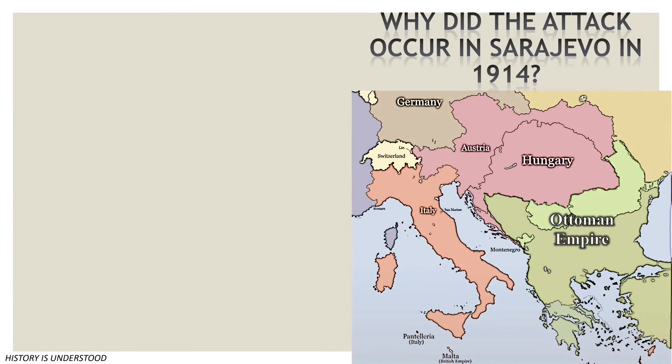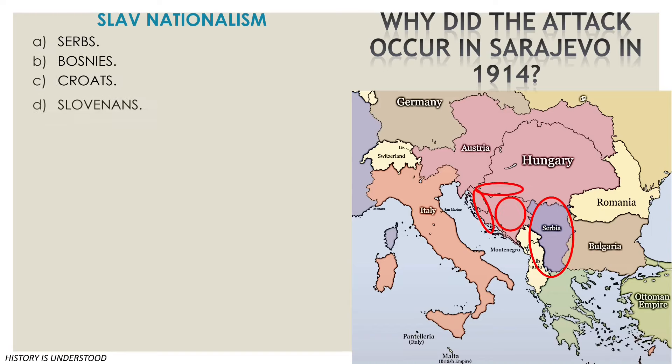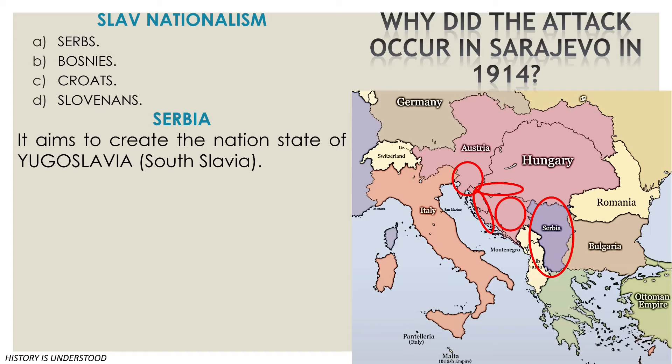At the end of the 19th century, and as a consequence of the fall of the Ottoman Empire in the Balkans, Slavic nationalism emerged with force, bringing together the Serbian, Bosnian, Croatian, and Slovenian populations. Taking as a model the recent unifications of Italy and Germany, Serbia intends to promote the new nation-state of Yugoslavia, literally translated as South Slavia, which would unite these populations.